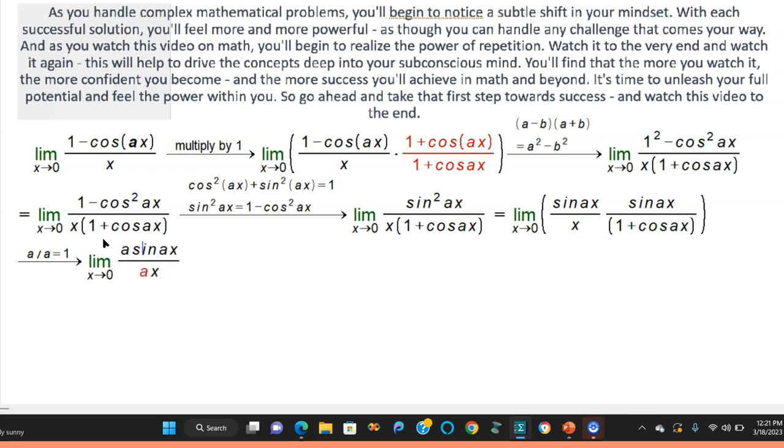Notice what I'm doing here. I'm putting an a here and an a here because that's divided. A divided by a is 1. That's why that's allowed. You're multiplying by 1. I'm telling you, multiplying by 1 is very powerful. Sine ax over 1 plus cosine ax.